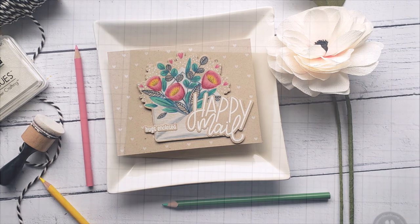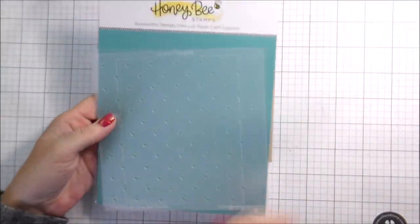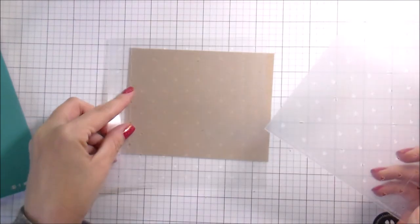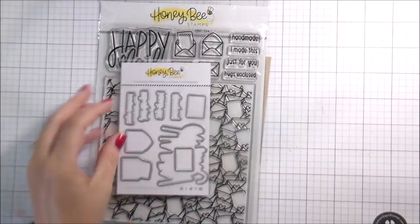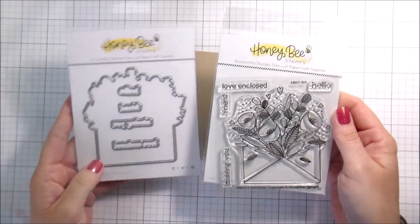Hi guys, it's Kelly here and I'm back with another video for Honey Bee Stamps. Today I'm going to be using the Quilted Hearts stencil, which also has quilted dots. I'm using the Happy Mail stamps and dies and the Pretty Postage stamps and dies.